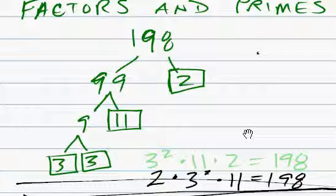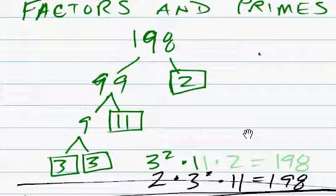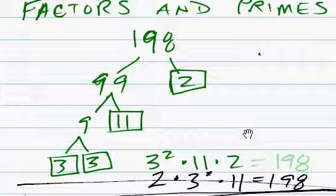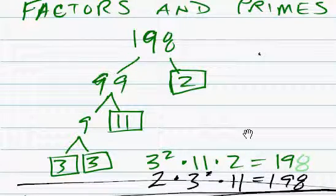So our finished calculation would be 3 squared times 11 times 2 equals 198.